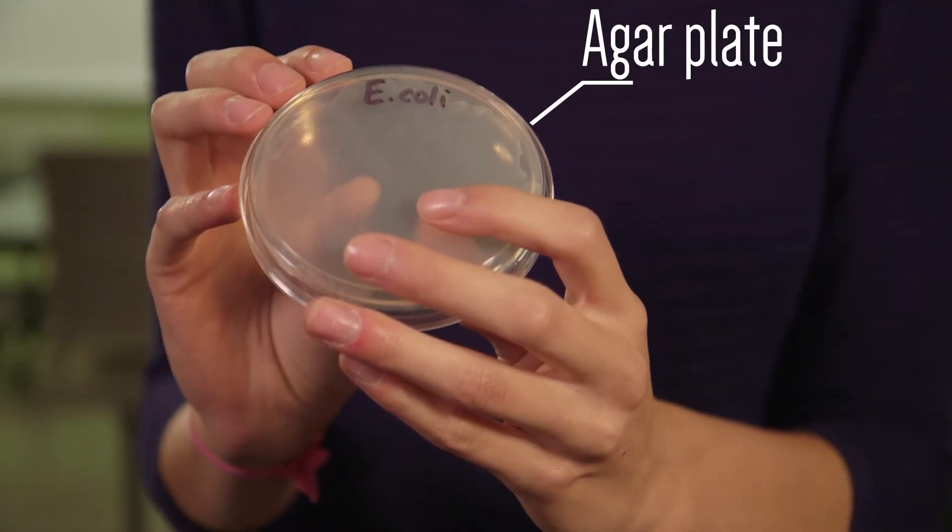Here is a petri dish containing sterile agar, commonly referred to as an agar plate. Agar is a gelatin-like substance made from seaweed. It is moist and contains nutrients, so it is an ideal environment on which bacteria can grow.